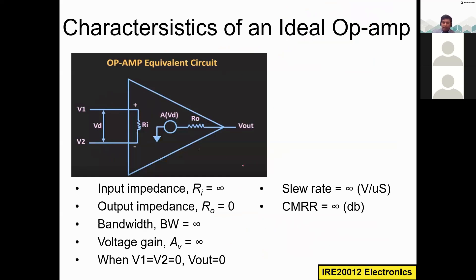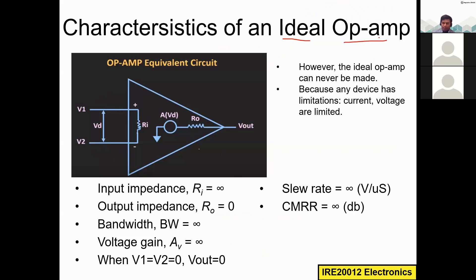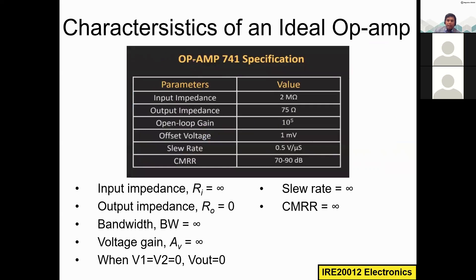These are the characteristics of an ideal operational amplifier. However, an ideal op-amp can never actually be made — just like no human being is truly perfect. Practical amplifiers have limitations in terms of current and voltage.